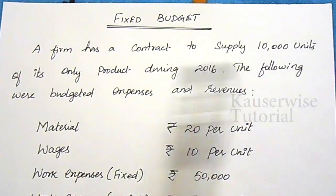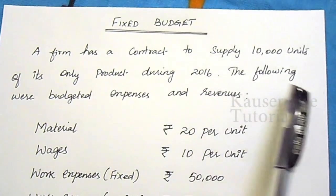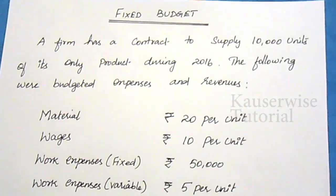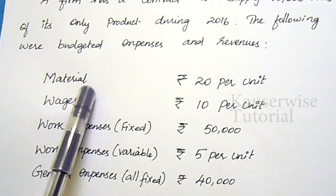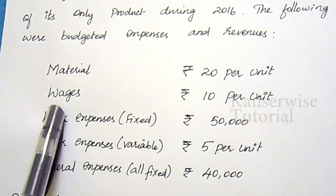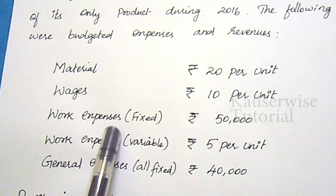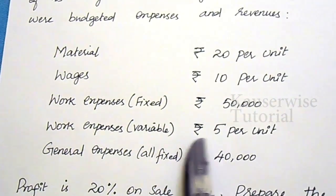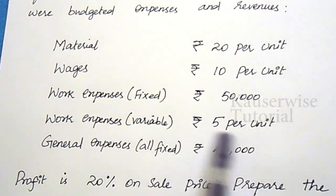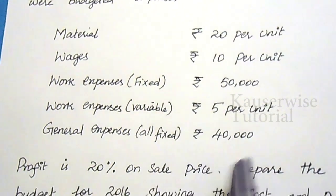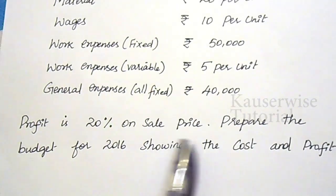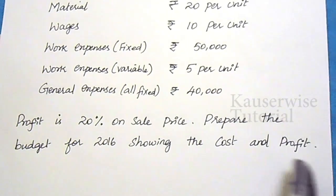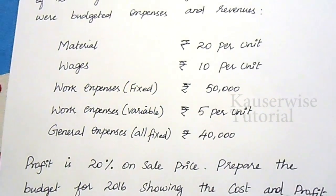A firm has a contract to supply 10,000 units of its only product during 2016. The following are the budgeted expenses and revenue: material ₹20 per unit, wages ₹10 per unit, work expense fixed ₹50,000, work expense variable ₹5 per unit, general expense fixed ₹40,000, and profit is 20% on sale price. Prepare the budget for 2016 showing cost and profit.